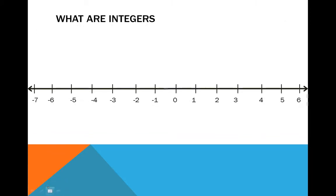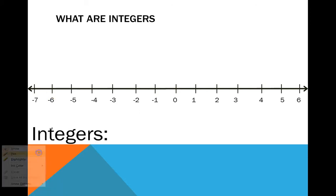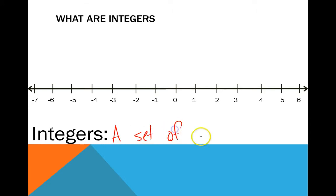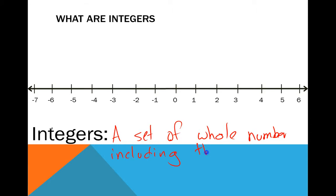What integers are is they are the whole numbers, but they also include their opposites. So it's a set of whole numbers including their opposites. You can see that we have 1 and negative 1, 3 and negative 3, 6 and negative 6, and so on. Opposites mean the negative part of the whole number — so 1 and negative 1; negative 1 would be the opposite.